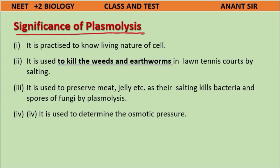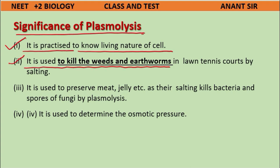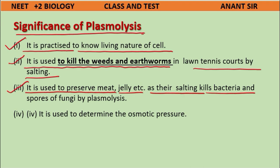Significance of plasmolysis: 1) It is used to determine the living nature of cells. 2) It is used to kill weeds and earthworms in lawns by salting. 3) It is used to preserve meat and jelly, as salting kills bacteria and spores of fungi by plasmolysis. 4) It is used to determine osmotic pressure.